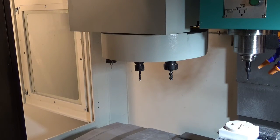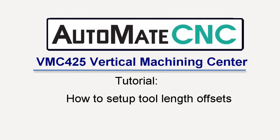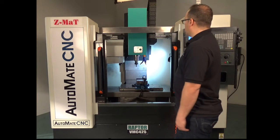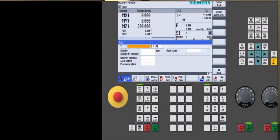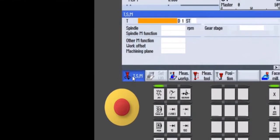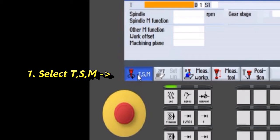And from here we can set up tool length offsets. So the first thing we're going to do is call a tool. When measuring tool length offsets, we call the tool number under TSM.